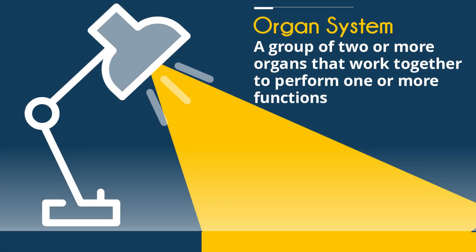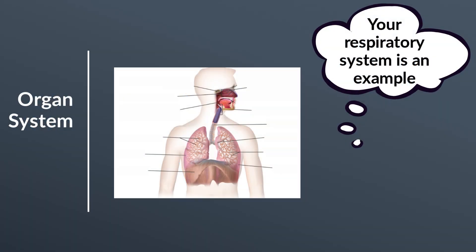And finally, an organ system is a group of two or more organs that work together to perform one or more functions. In this picture, you have the respiratory system, which is many organs working together to help convert oxygen into energy.